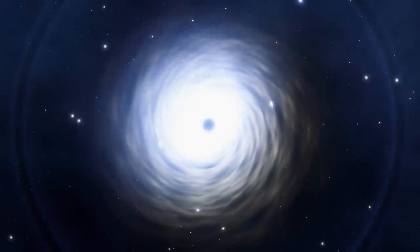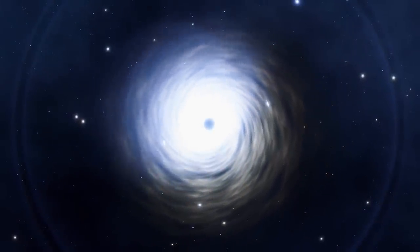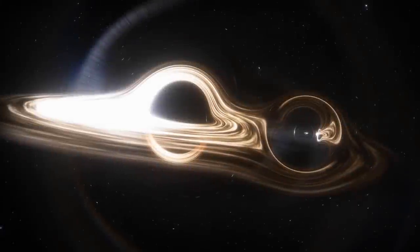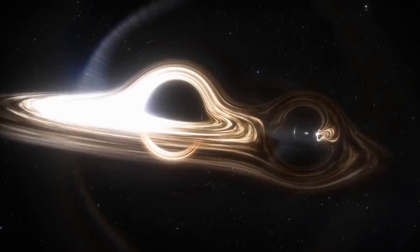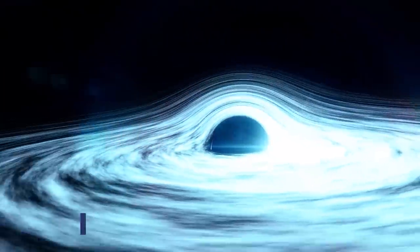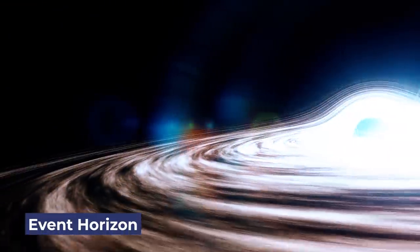White holes are hypothetical cosmic objects with completely different behavior than black holes. While black holes pull matter and light into an incredibly dense center called a singularity, white holes do the opposite. They push out matter and light, preventing anything from entering beyond a boundary known as the event horizon.